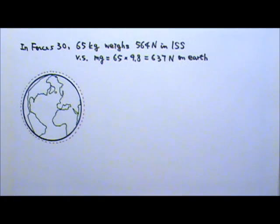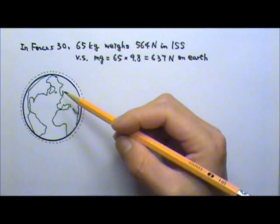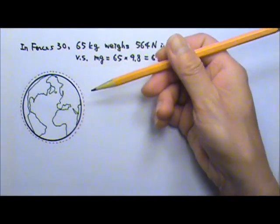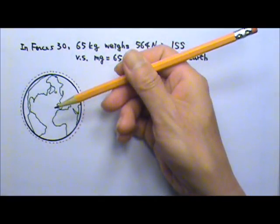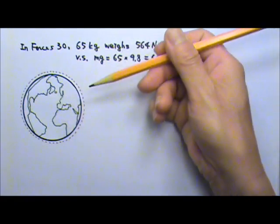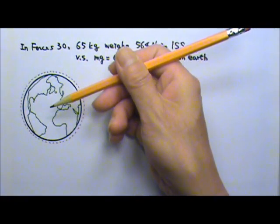To appear to be weightless or to have zero apparent weight, one just has to have an acceleration that is the same as the gravitational acceleration g, same amount and same downward direction towards the center of the Earth.